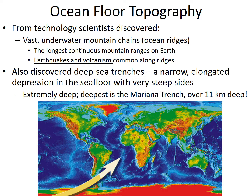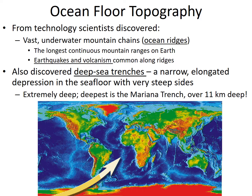From this technology, scientists discovered vast underwater mountain chains — ocean ridges — with earthquakes and volcanoes very common along them. They also discovered deep sea trenches: narrow, elongated depressions in the seafloor with very steep sides. The deepest is the Mariana Trench, over 11 kilometers deep — about six to seven miles. These trenches are amazing places with unique bacterial life and animals that can't live anywhere else.